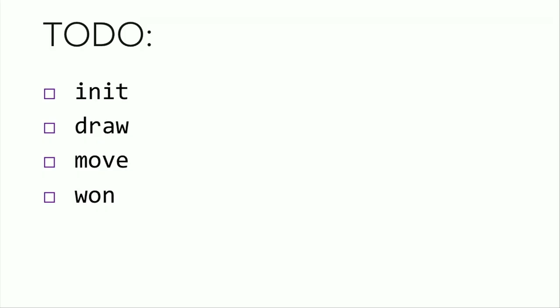It checks if the game is won and exits once the user's won the game. And to win the game, it gets input from the user and calls the move function. So we're going to be implementing four functions for the game of 15: init, draw, move, and won.